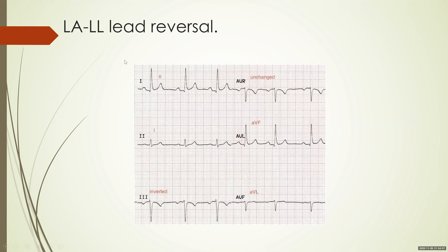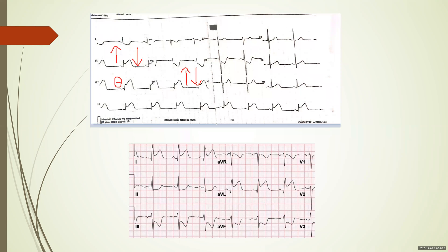So: lead 1 becomes 2, lead 2 becomes 1, aVL becomes aVF, and aVF becomes aVL. On a normal ECG you might not pick this up, because it doesn't cause significant changes — except it might cause a slight leftward axis deviation and lead 1 becomes more prominent. It seems reasonably normal and is difficult to detect.